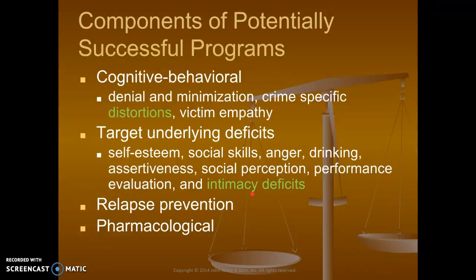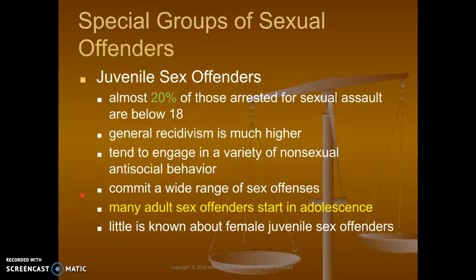Treatment also includes relapse prevention and the pharmaceutical component — what medications help with their problems. Regarding juvenile sex offenders, almost 20% of those arrested for sexual assault are below age 18. In clinical work with kids and teens, younger teens can get in trouble for sexual assaults — not always rape, sometimes forms of frotteurism, touching inappropriately in school hallways. Many adult sex offenders start in adolescence — it gets wired in early, typically beginning around the start of puberty rather than developing in adulthood.